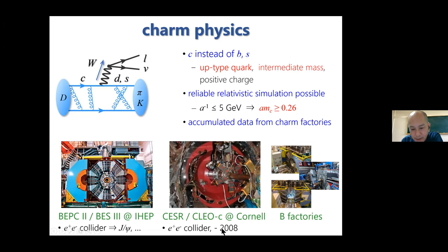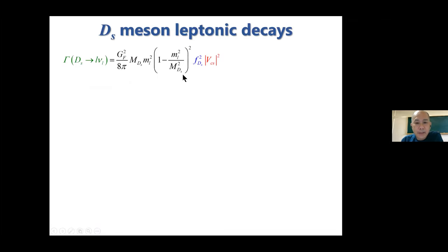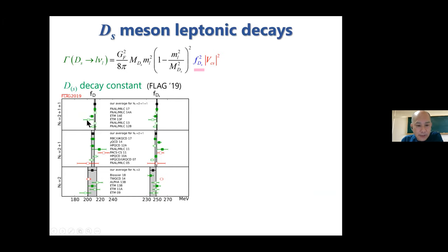I also note that the B factories can also provide information on data for charm hadron decays. The simplest decay is the leptonic decay. The master formula is the same as the D meson leptonic decay. Here shows the calculation of the D meson decay constant.